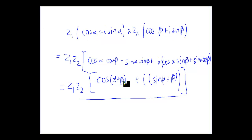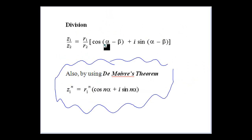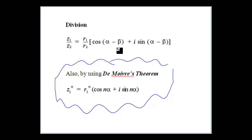There's the proof — you can pause and have a look. It's just an expansion where we collect terms together. The same approach applies to division: you divide the moduli of both numbers and subtract the arguments. That's all it takes, and that's where modulus-argument form starts to be much easier.